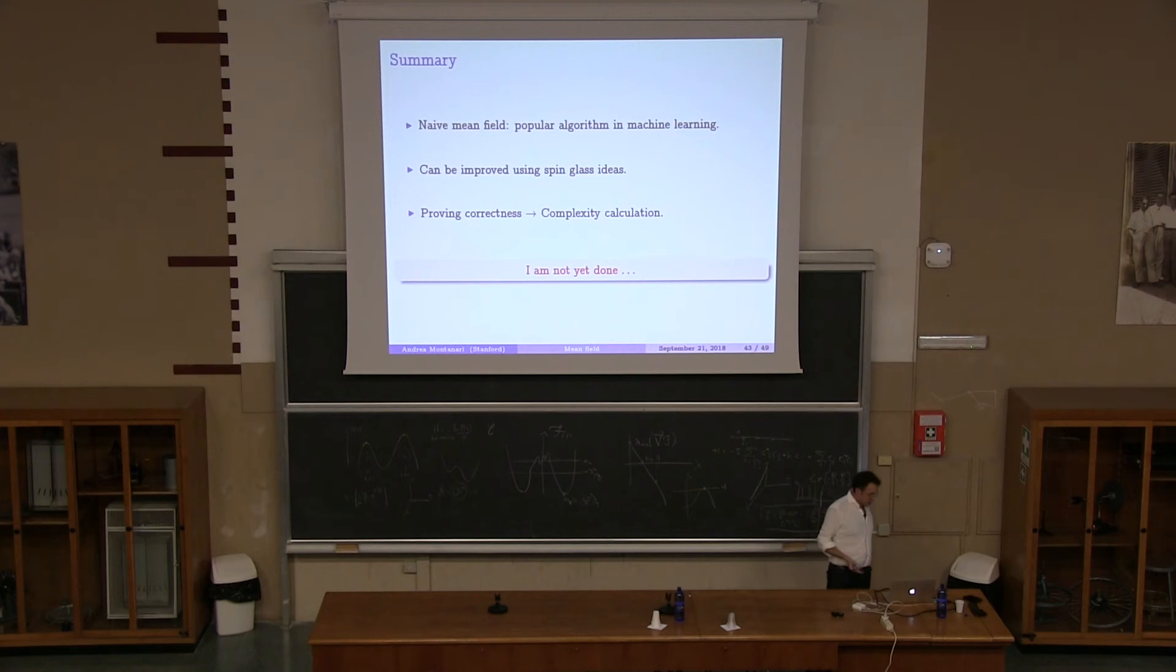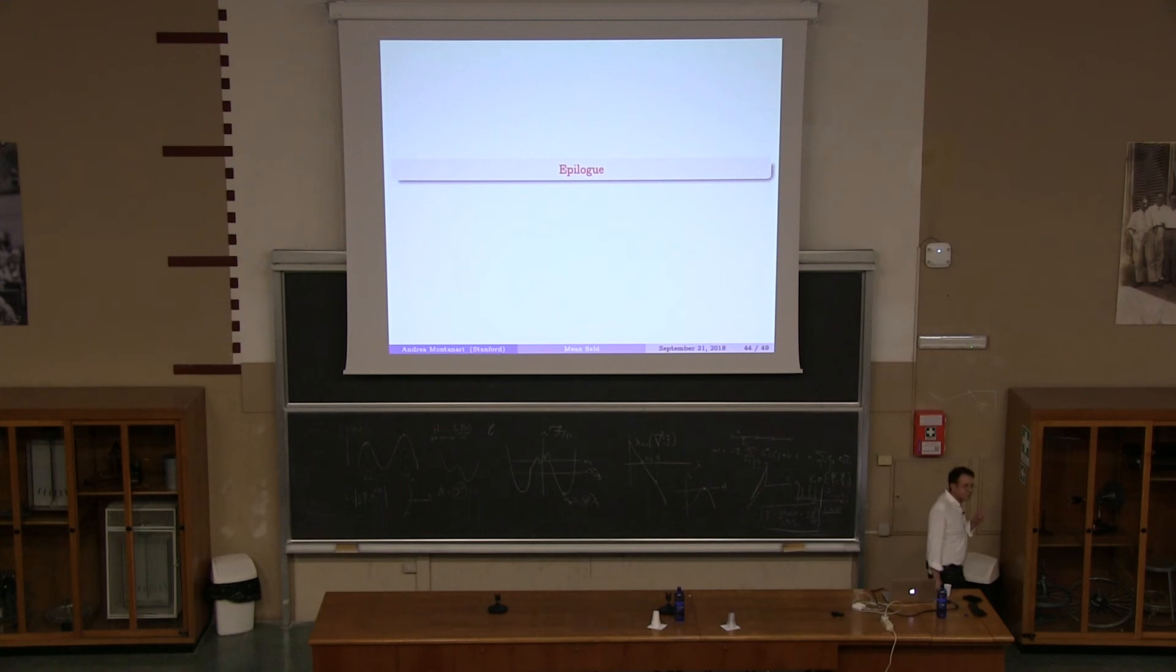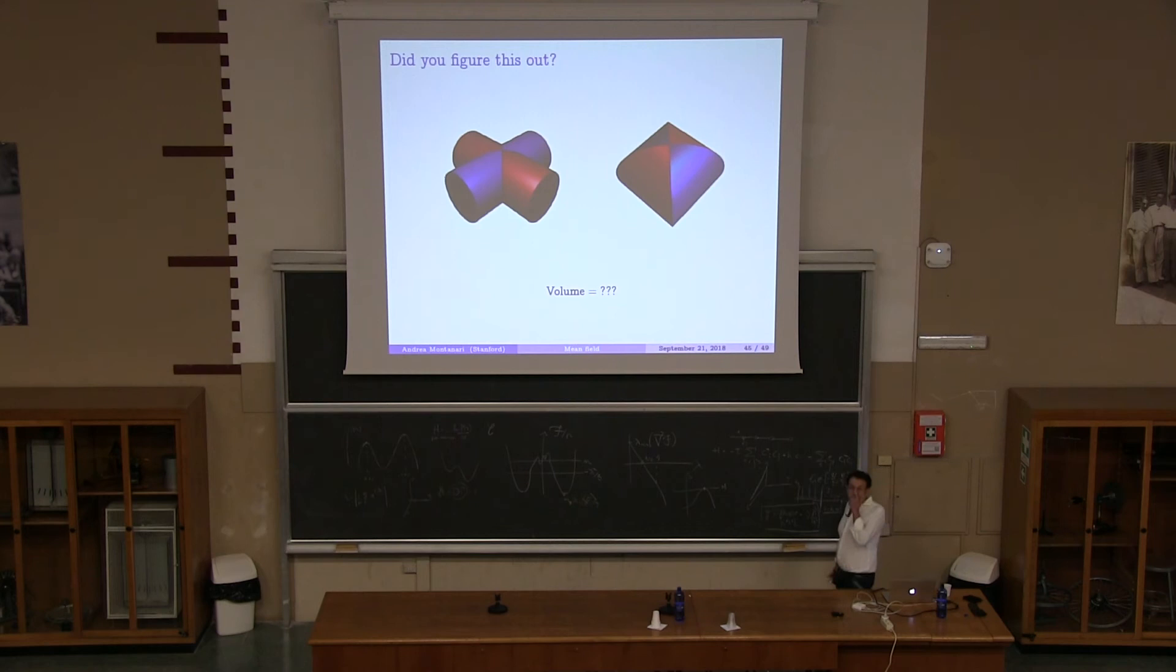Okay? So, okay, I think this is a good motivation. Naive mean field is really a popular algorithm in machine learning. And I think it can be improved using spin-glass ideas. And, you know, remarkably, we ended up doing a complexity calculation that ends up being kind of amusing and non-trivial. Now, I'm not yet done because I asked you to do this calculus exercise. Did anybody figure it out? Okay, it's two-thirds. Okay, and, okay, now what is more interesting, okay, you can do it at home. What is more interesting is what is the connection? And the connection is through the person, the man who did this first.